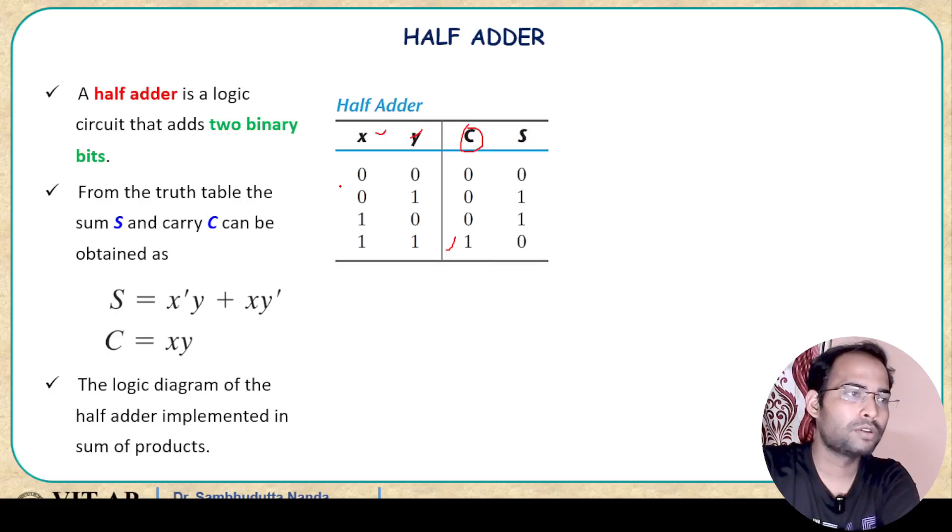So if we see in the table, first one is 0 plus 0. So 0 plus 0, the sum is also 0 and the carry is also 0, no carry is generated here. Similarly 0 plus 1, it will result sum as 1 and carry as 0 here. Then 1 plus 0 also similarly, sum as 1 and carry as 0. Then your last input that is 1 and 1, so it will generate the answer as 1 0, where the sum will be taken as 0 and the carry will be taken as 1.